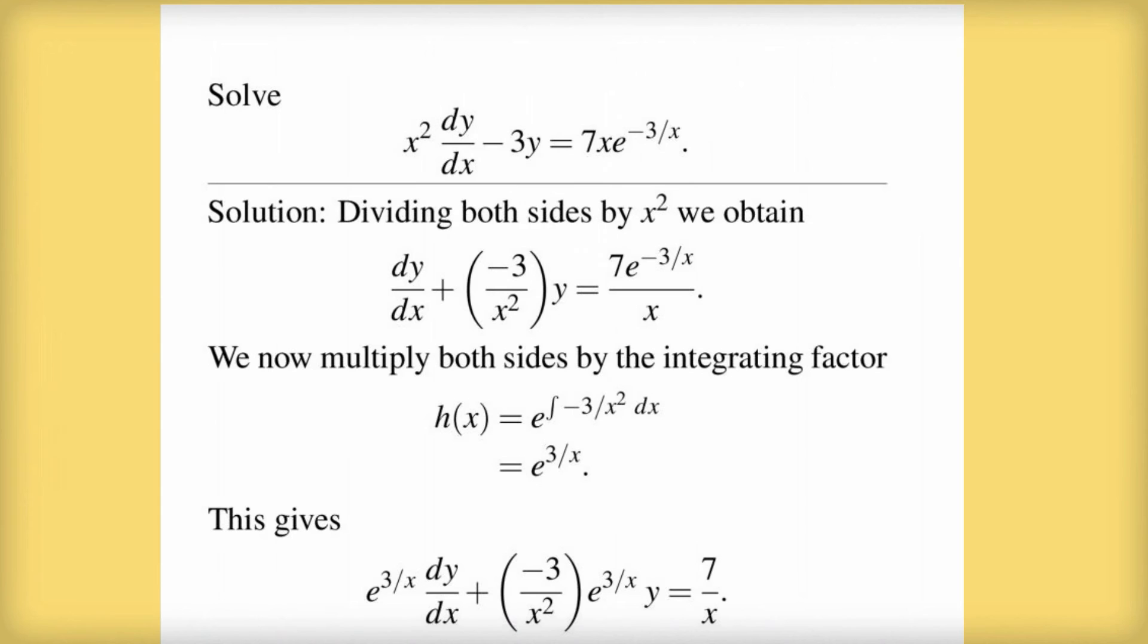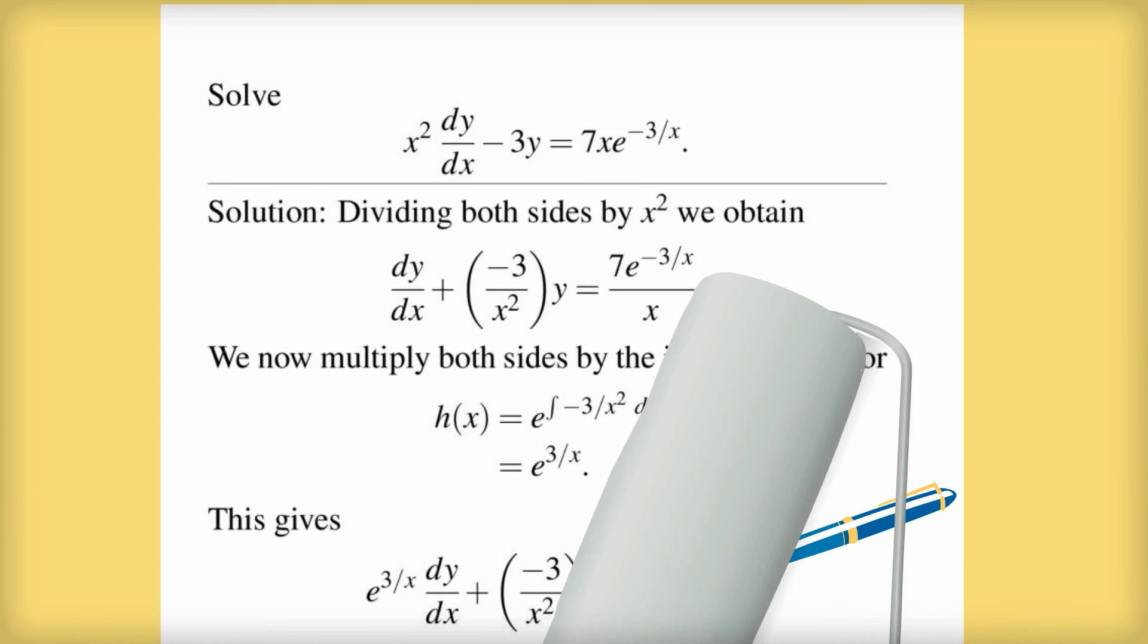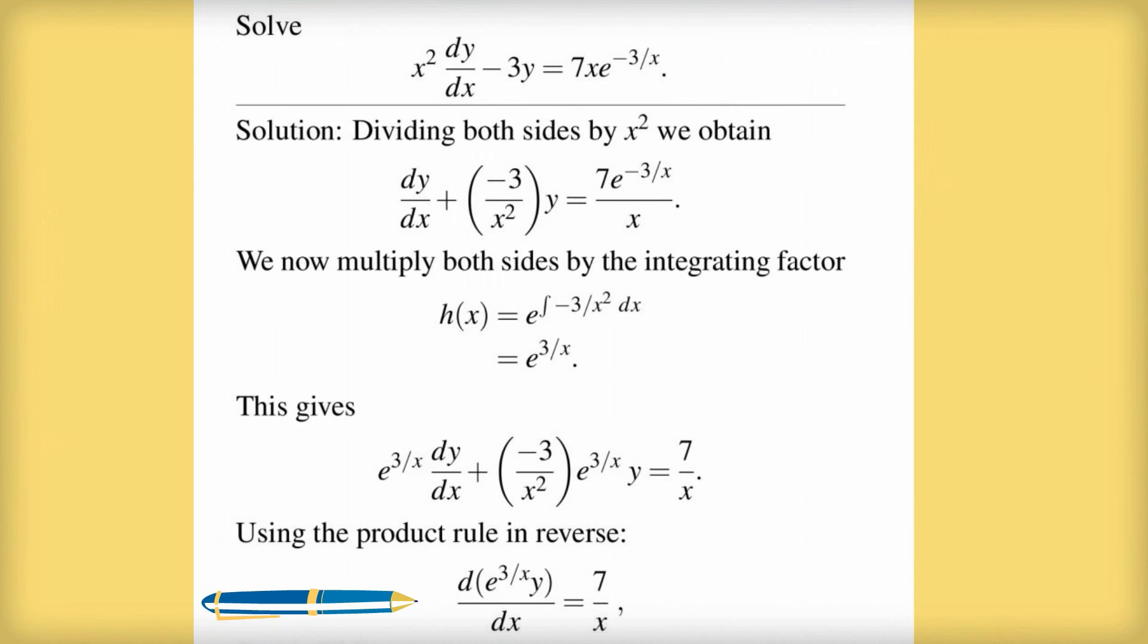So now I multiply both sides of my differential equation by e to the 3 divided by x because that's the integrating factor. And here's what I get. And now we can see the beauty of this type of solution. The left hand side is the derivative with respect to x of e to the 3 on x times y. You can try it out and see yourself. And the right hand side we'll just leave as is.